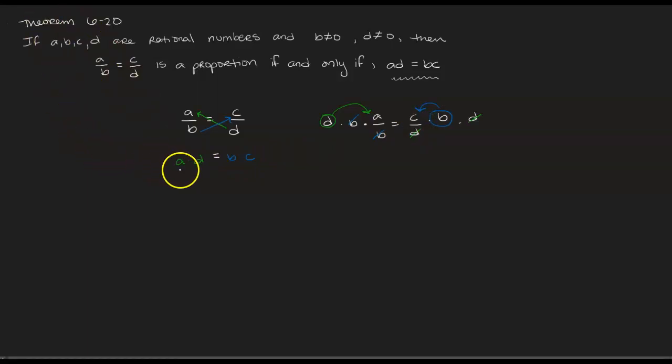So on the left we have A times D left over, and on the right we have B times C left over. So this idea of cross multiplying actually comes from multiplying through by the LCD. So we can check to see if a proportion is true just by doing this cross multiply or multiplying through by the common denominator of the equation.